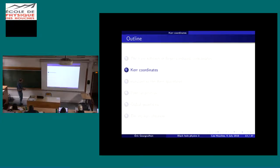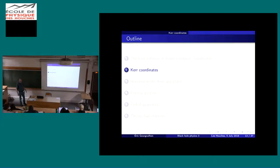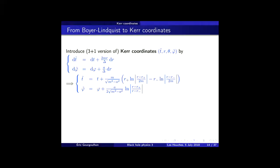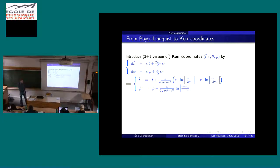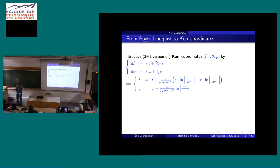Since we have singularities in the Boyer-Lindquist coordinates at rho equals zero and delta equals zero, we may try to remove at least some of them by a change of coordinates, exactly as we did for Schwarzschild when we moved from Schwarzschild-Ross coordinates to Eddington-Finkelstein ones. This change of coordinates leads us to the Kerr coordinates, which are defined like this. Not only we change t, but we also change phi, the azimuthal coordinate, by this formula.